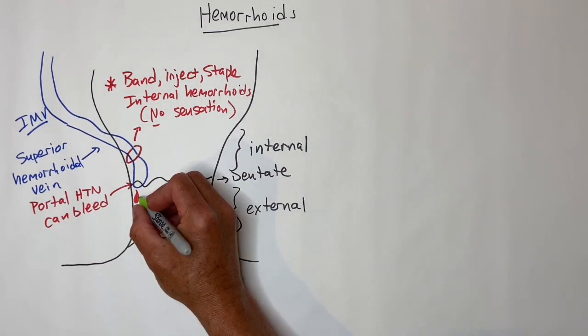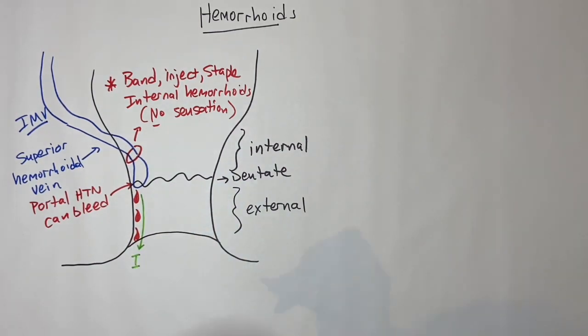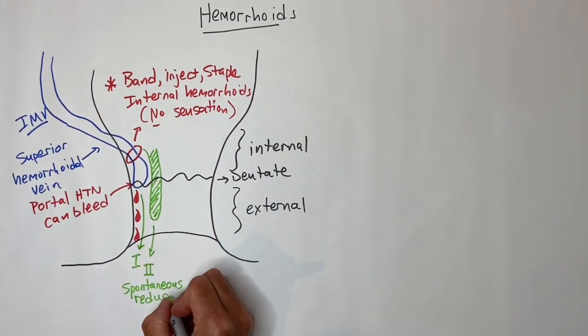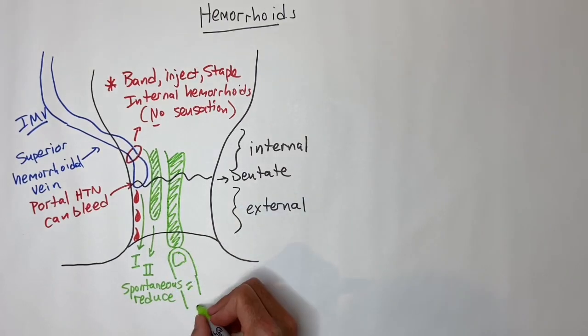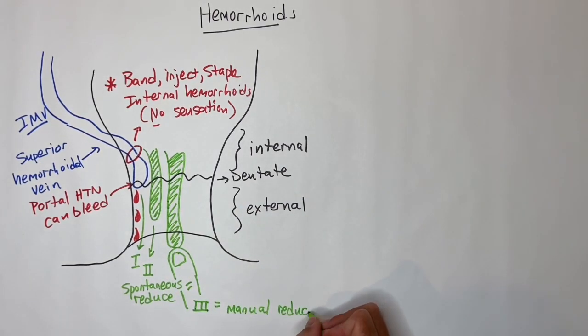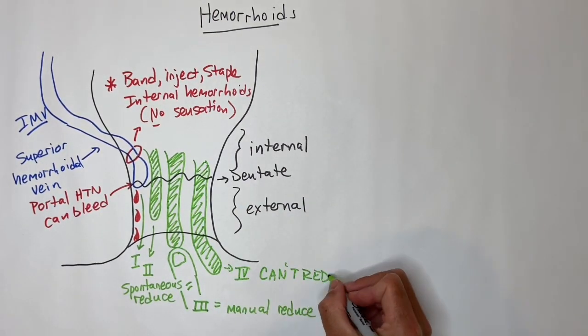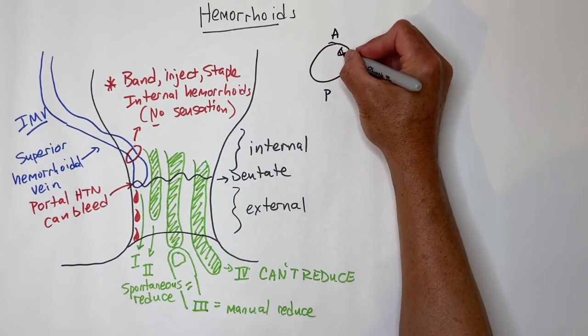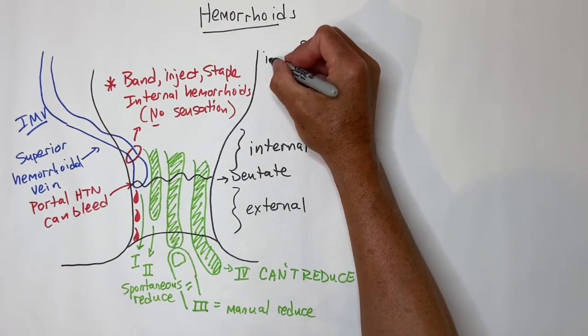Internal hemorrhoids are the ones that have the grading system. Grade 1: no protrusion from the anus. Grade 2: protrudes from the anus but spontaneously reduces. Grade 3: need manual reduction. Grade 4: you cannot reduce. The internal hemorrhoids are the ones that have the left anterior, left posterior, and right lateral positions.